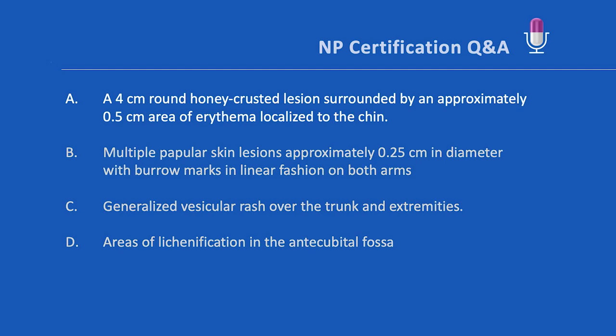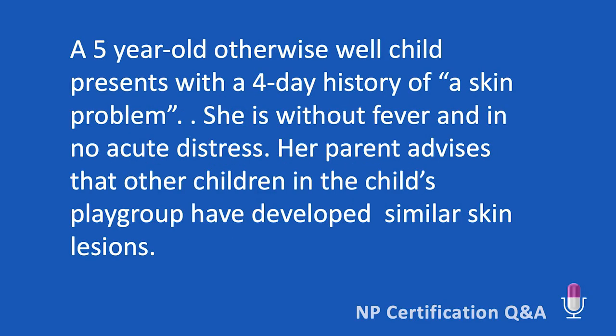The correct answer is A: a four-centimeter round honey-crusted lesion surrounded by about a 0.5-centimeter area of erythema localized to the chin. Where should you start? First, determine what type of question this is. Given this question is focusing on information gathering, this is an assessment question.